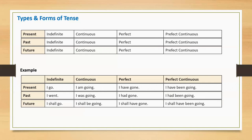Future indefinite: I shall go. Future continuous: I shall be going. Future perfect: I shall have gone. And future perfect continuous: I shall have been going.